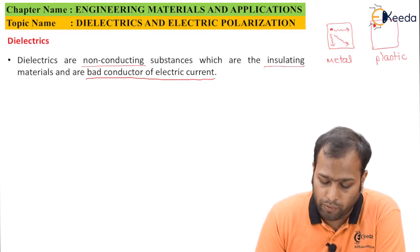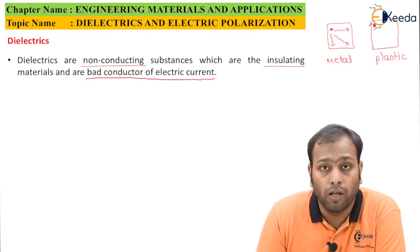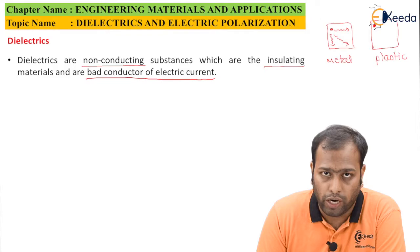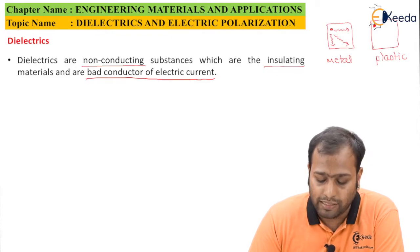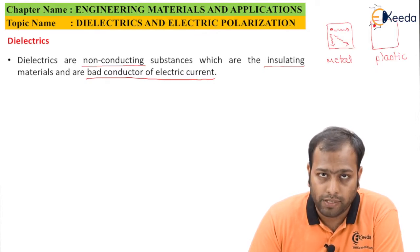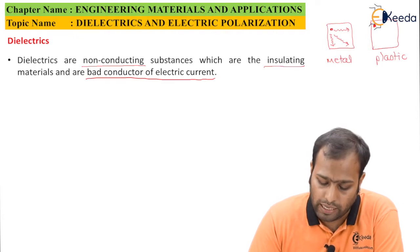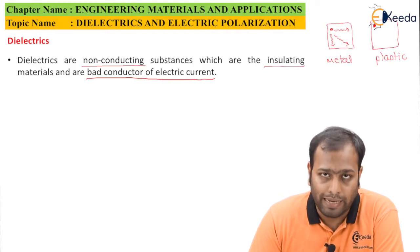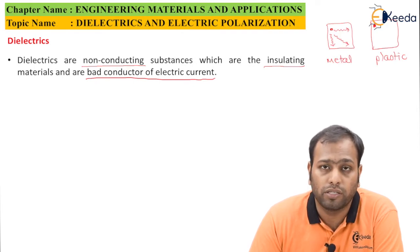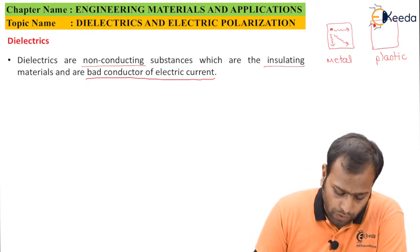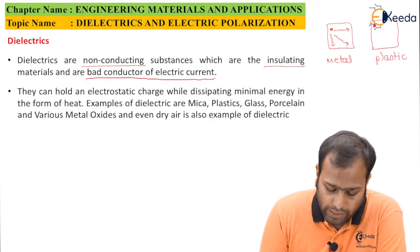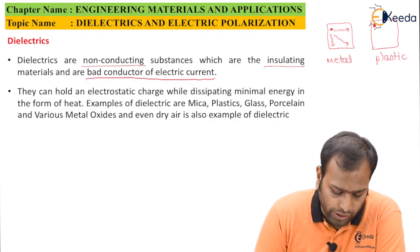This is the particular advantage of having a non-conducting or insulator material for a charge. In a metal, if the charge gets dissipated, the net amount of charge on a particular point would be minimized. For example, if you have x units of charge spread across 10 units of area, per unit area the charge would be less. However, in the case of plastic, the charge is localized or concentrated at one point, so dielectrics can hold electrostatic charge while dissipating minimum energy in the form of heat.